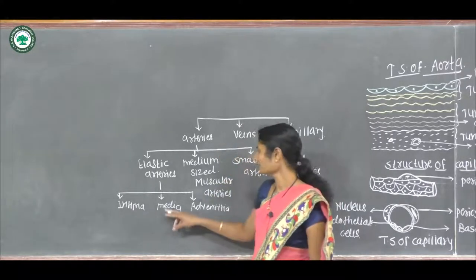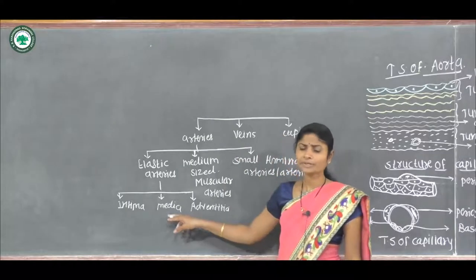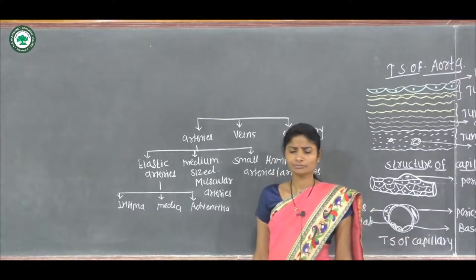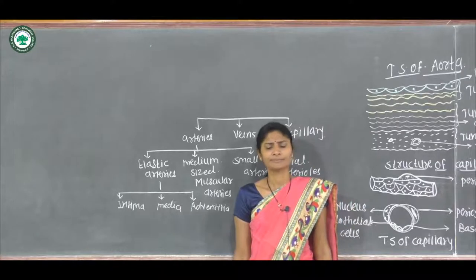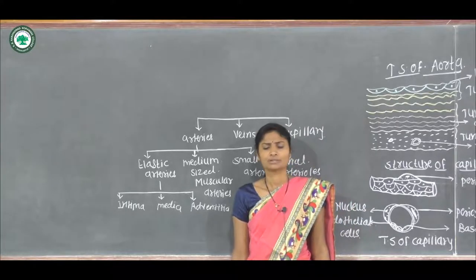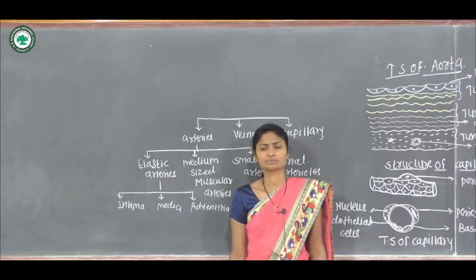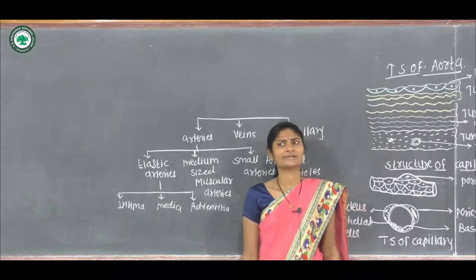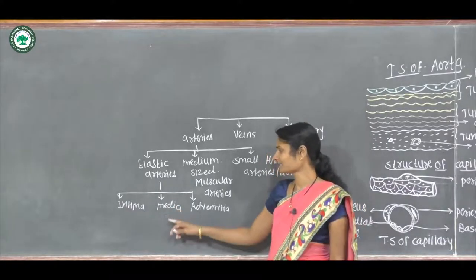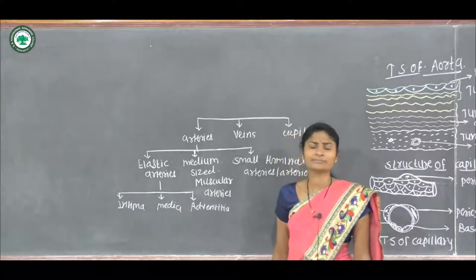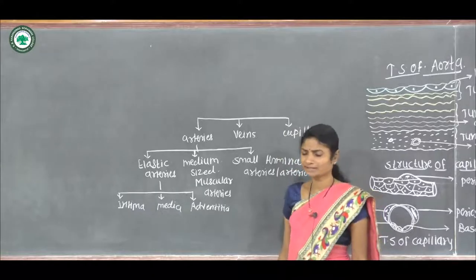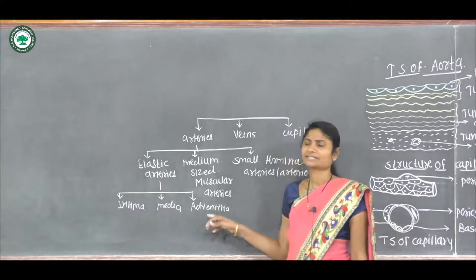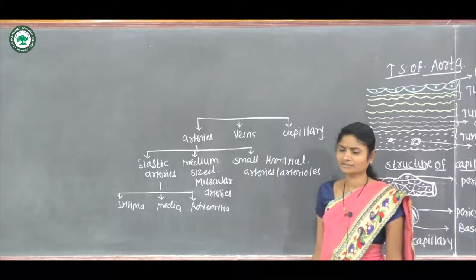In the tunica media layer, numerous elastic membranes, collagen fibers, and smooth muscles are present, as well as fibroblast cells. The next layer is the adventitia layer.